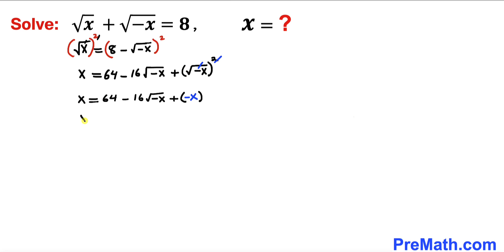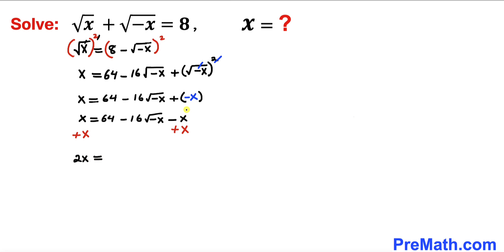And now we can write x equals to 64 minus 16 times square root of negative x, and here positive times negative is going to give us negative x. Now let's go ahead and add x on both sides. On the left hand side x plus x gives us 2x equals to, and on the right hand side the negative x is gone, so we ended up with 64 minus 16 times square root of negative x.